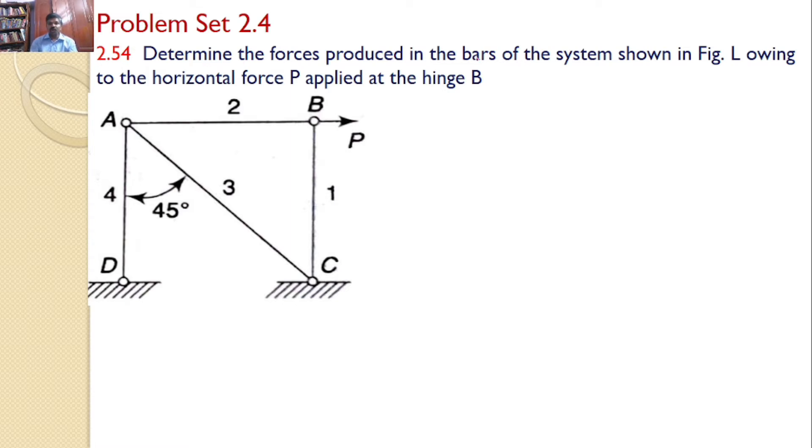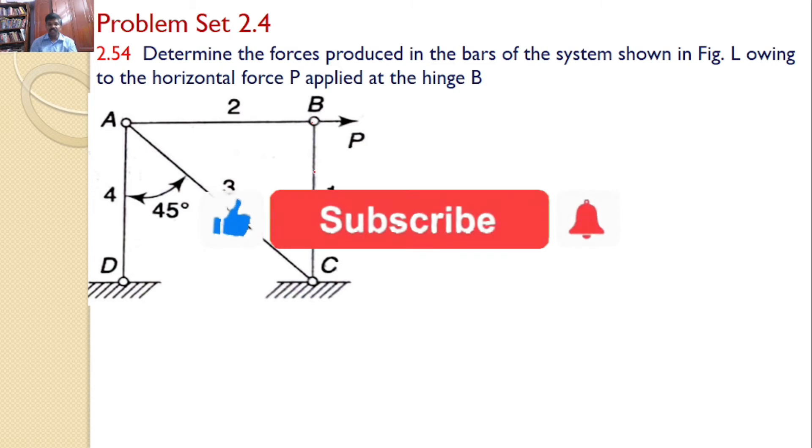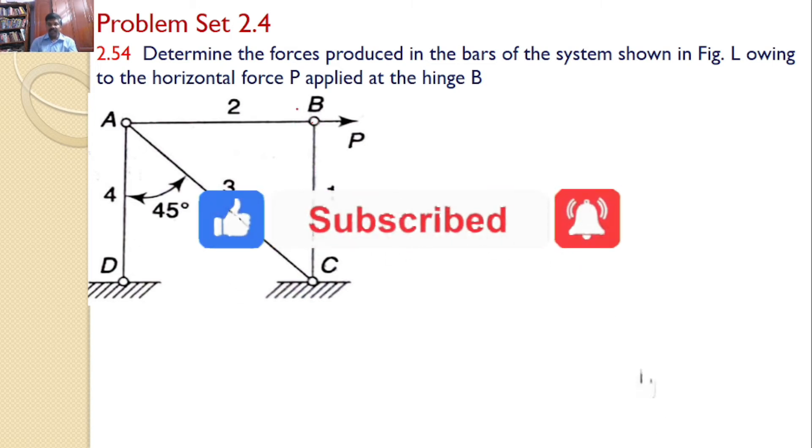Determine the forces produced in the bars of the system shown in the figure, owing to the horizontal force P applied to the hinge at B. We can consider the hinges A and B and find the various forces acting at the hinges A and B and apply equilibrium conditions.